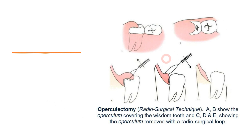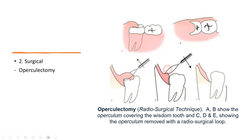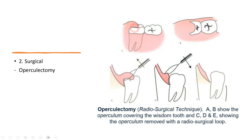Surgical treatment consists of two types. The first is operculectomy, which means removing the section of operculum directly over the mandibular third molar causing pericoronitis. Using a scalpel, the operculum is pulled back and the tissue is excised — this is the final result of operculectomy. However, this treatment is not very effective; it is only a temporary solution because the operculum tends to grow back over the mandibular third molar, so it is not the preferred approach.